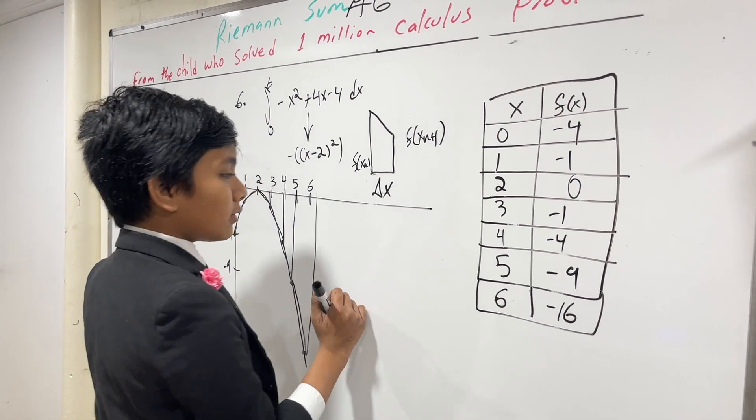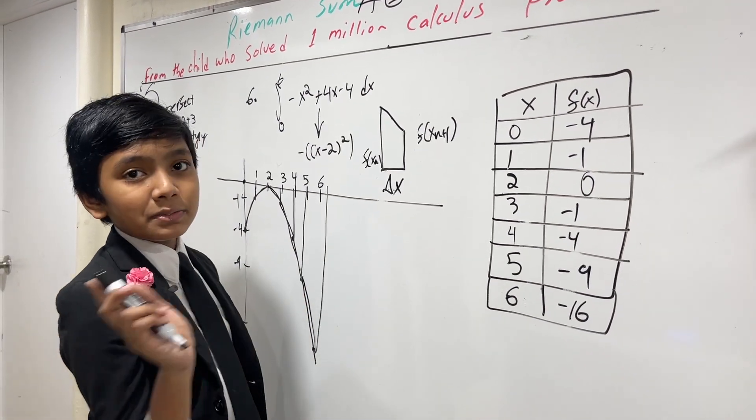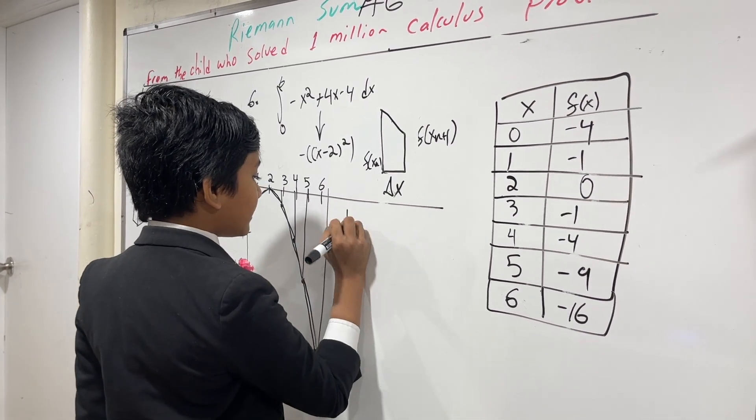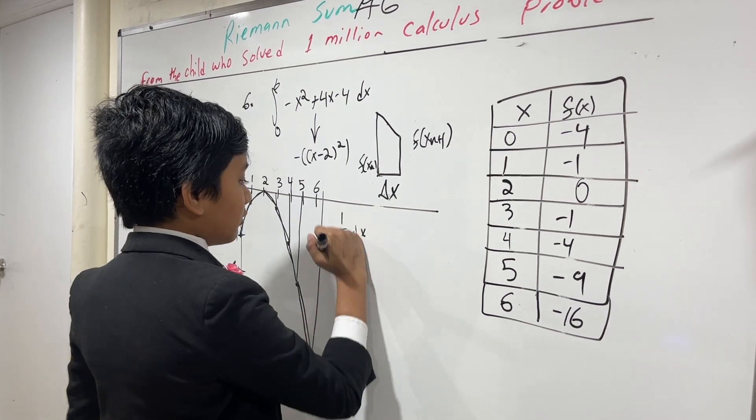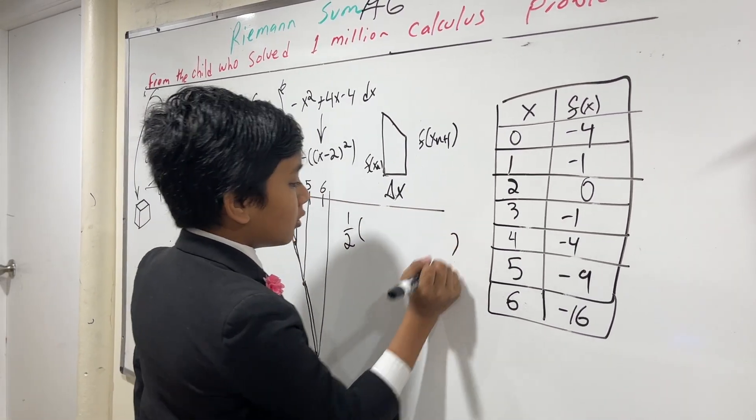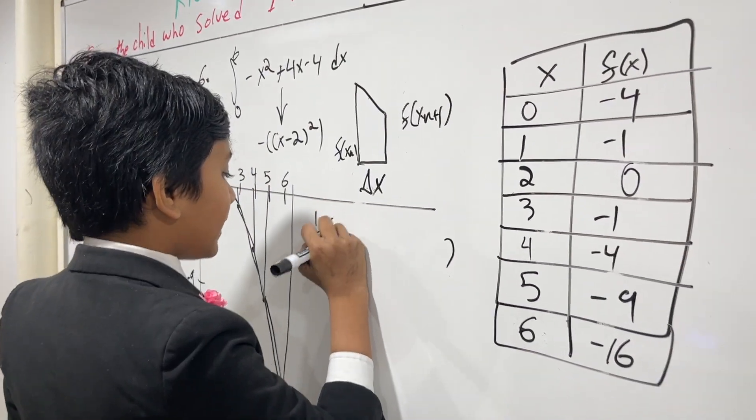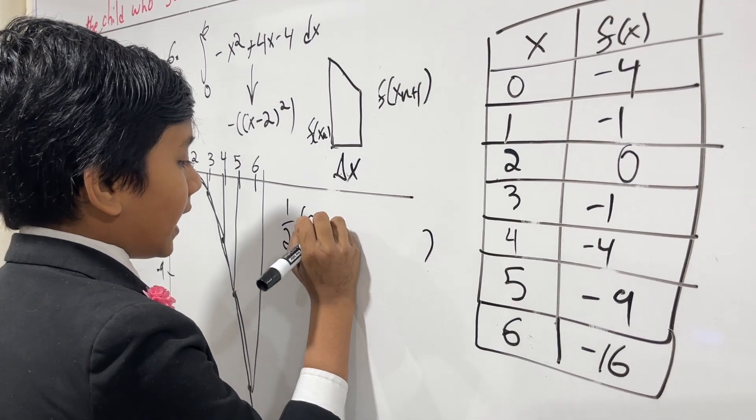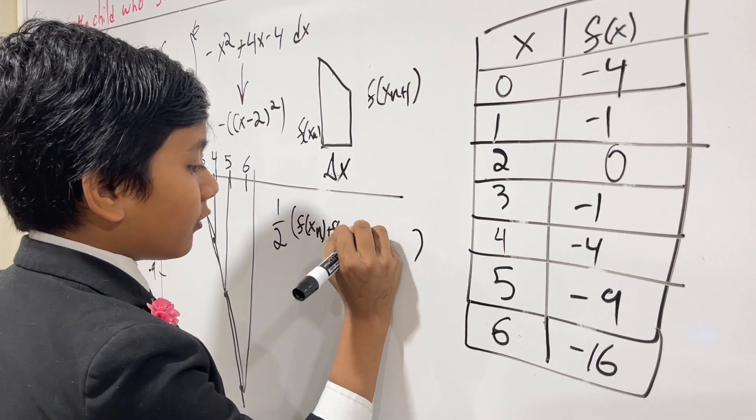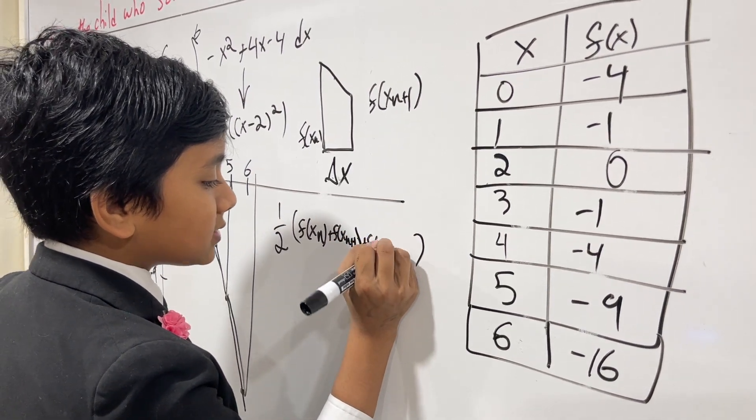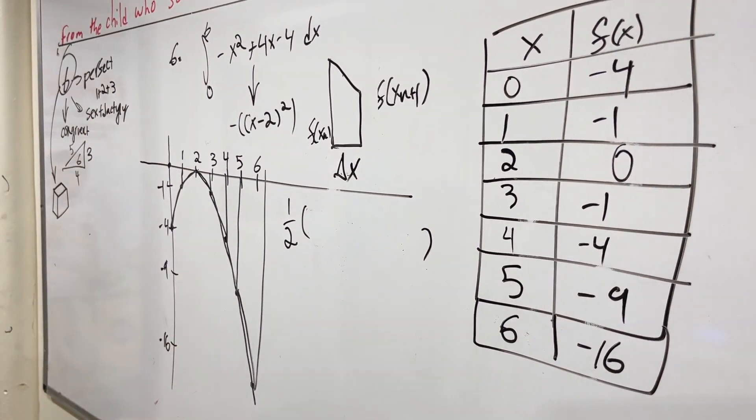And you might notice, if you sum up the areas of many trapezoids, one-half and Δx will always be in every single term. So we can basically factor that out. And Δx is one, so we don't really need that. So we have one-half. And then what do we get inside? Well, we get f(xₙ) + f(xₙ₊₁) + f(xₙ₊₁) + f(xₙ₊₂), and so on until we reach the last term. All right, so let's begin.